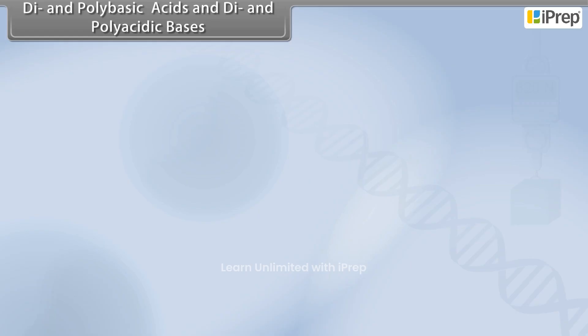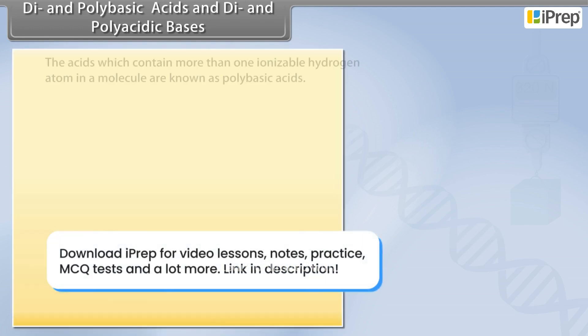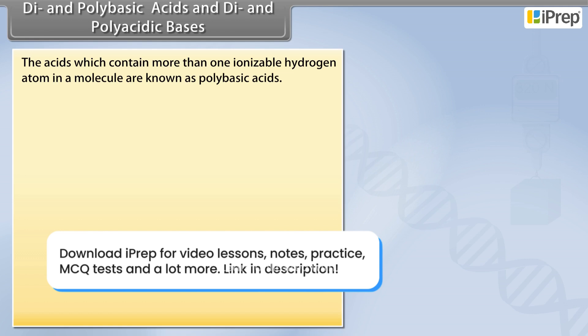Di- and polybasic acids and di- and polyacidic bases. The acids which contain more than one ionizable hydrogen atom in a molecule are known as polybasic acids.